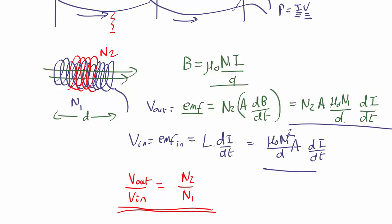If you want to drop the voltage ten times, you need ten times fewer loops on the output than the input. If you want to make the voltage ten times bigger, you'd have ten times more loops on the input than the output. If you've got the same number of loops on the input as the output, it doesn't change the voltage at all.